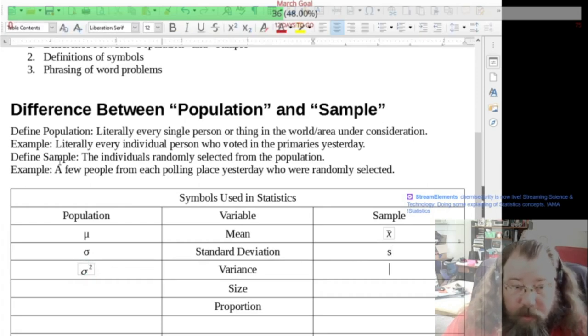For variance, it's going to be sigma squared, and for the sample, it's going to be s squared.